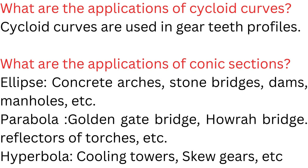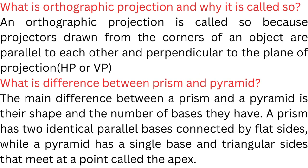What are the applications of conic sections? Ellipse: concrete arches, stone bridges, dams, manholes, etc. Parabola: Golden Gate Bridge, Howrah Bridge, reflectors of torches, etc. Hyperbola: cooling towers, screw gears, etc.